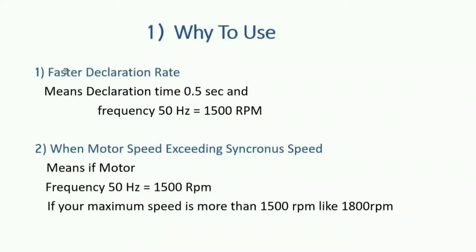First, in faster deceleration rate — if the deceleration rate is set at 0.5 or less and the frequency is 1500 or more, then when we stop the motor the voltage exceeds. Second, when the motor speed is exceeding synchronous speed — that means above 1500 RPM normal motor speed — if it is running at 1800 or more, then there will be an overvoltage.